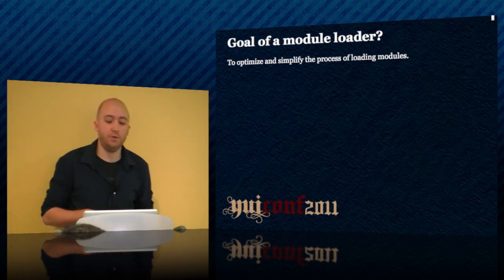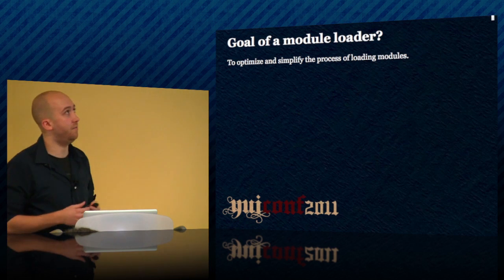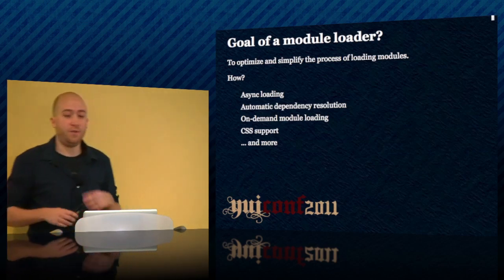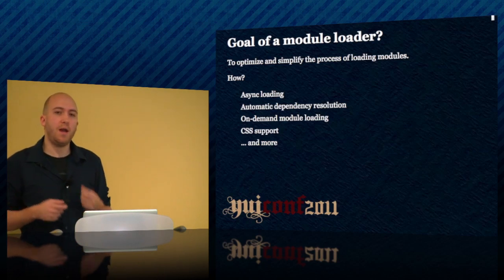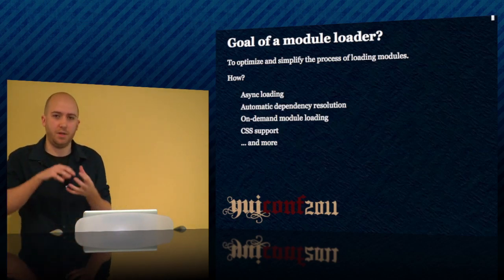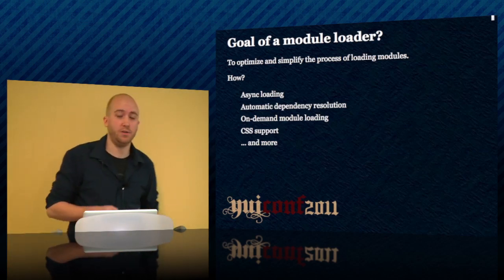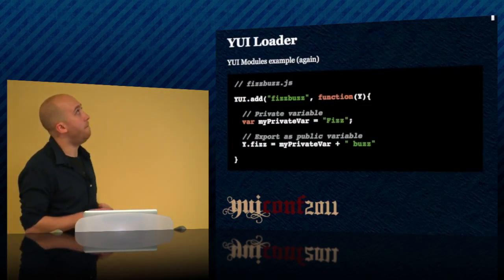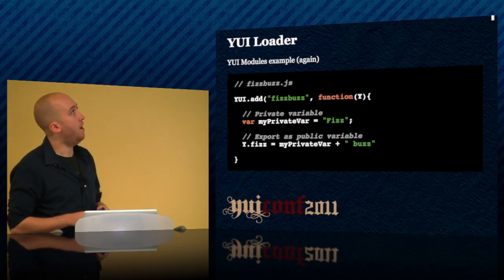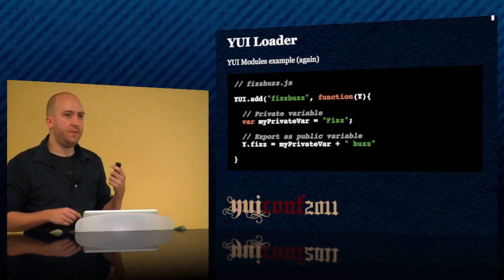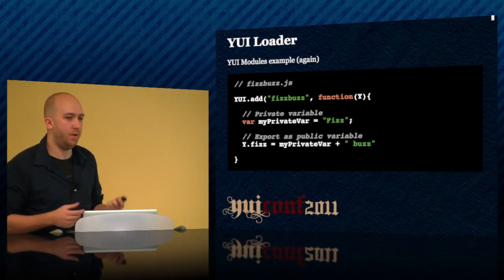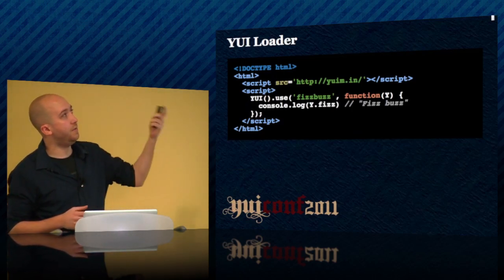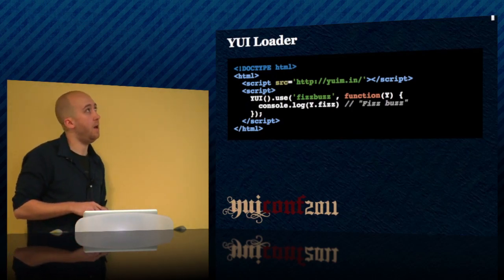The goal of a module loader is to optimize and simplify the process of loading modules. It addresses the issue of blocking by asynchronous loading, addresses dependencies with automatic dependency resolution. It supports on-demand module loading no matter how deeply nested you are inside your application, and it also supports CSS loading as well. So how do you use Loader? Going back to our YUI module example — you have your YUI function that you call 'use' on, tell it you want to load FizzBuzz. Loader at this point doesn't know exactly where FizzBuzz is, but the easiest way is to give it a loader configuration object.